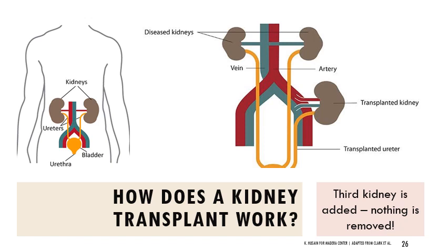Another thing you might encounter in healthcare is kidney transplants. When you have a kidney transplant, the diseased kidneys usually stay in place — another kidney is simply added and hooked up to particular blood vessels to filter blood. A ureter is added connecting to the bladder, and then everything exits through the bladder and urethra. So the third kidney is just added; nothing is taken out.